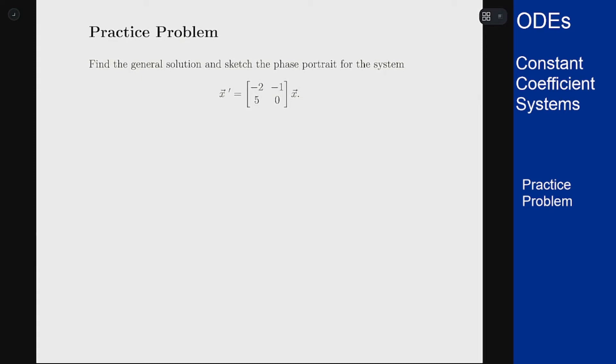In this example we want to find a general solution and sketch a phase portrait for a constant coefficient system. We have the system minus two minus one five zero x for x prime and our first step here is